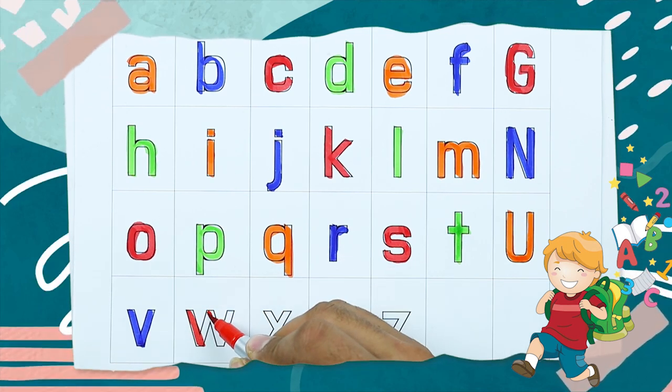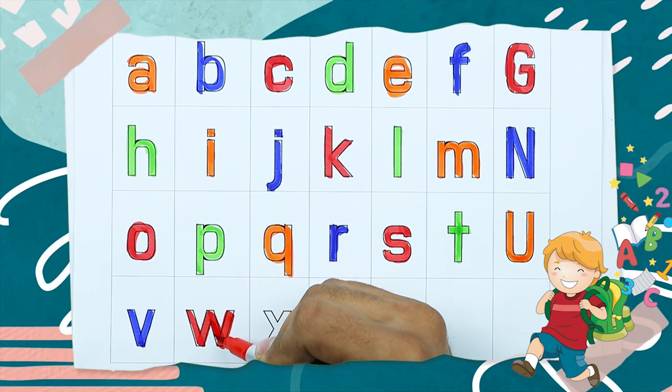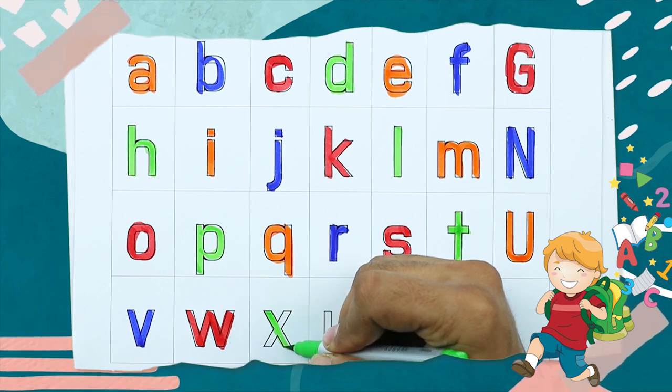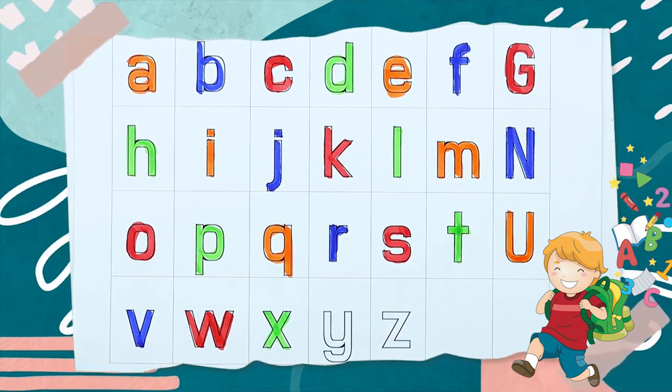W, W, capital, small w with red color, W for watch. X, small x with green color, X for xylophone.